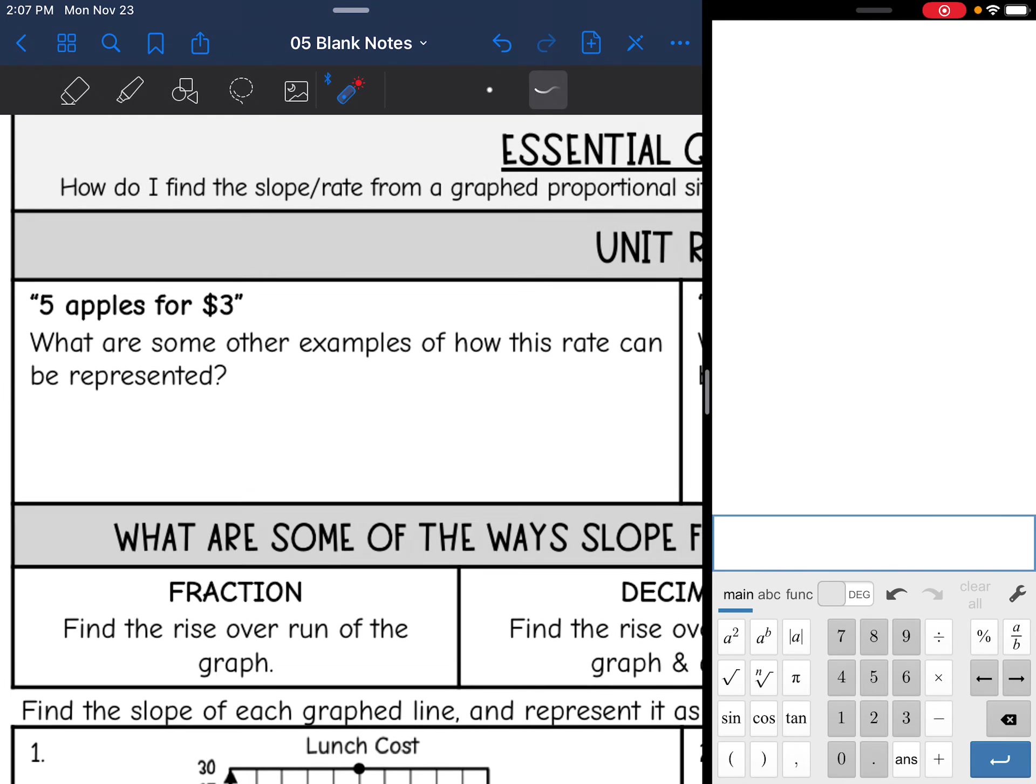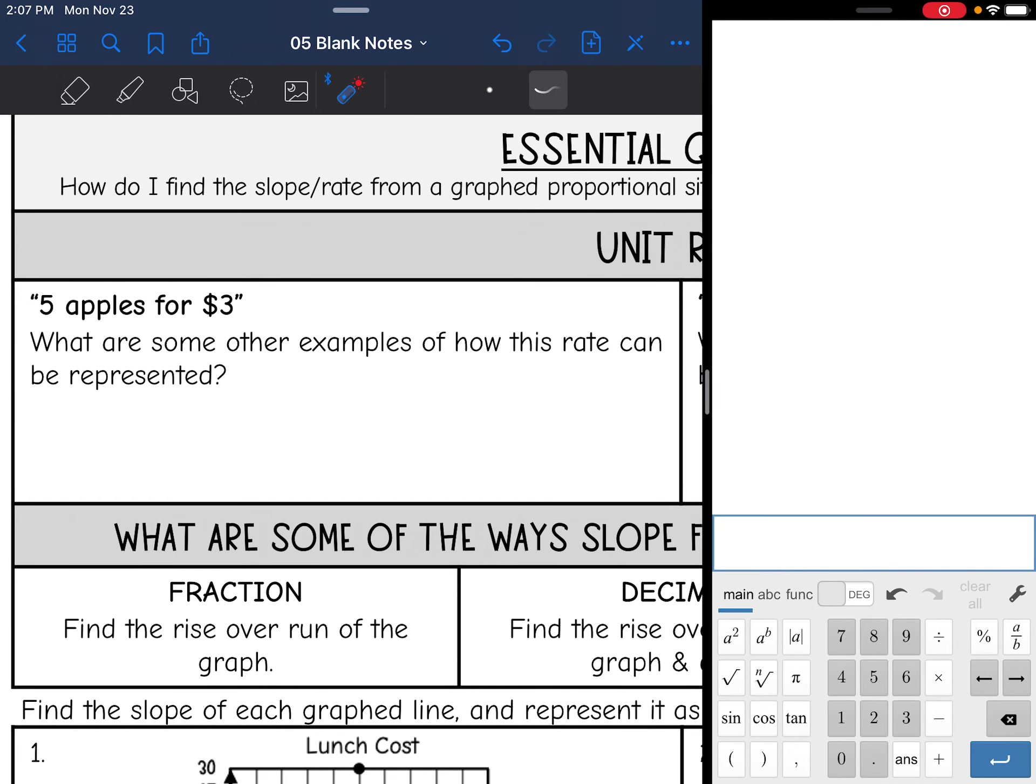This first one is five apples for $3, and we want to show some other examples of how this rate can be represented. First let's find the unit rate, which would be the amount for one apple. I'm going to do three divided by five. It's $3 for five apples, and I get 60 cents. So that means that one apple is 60 cents.